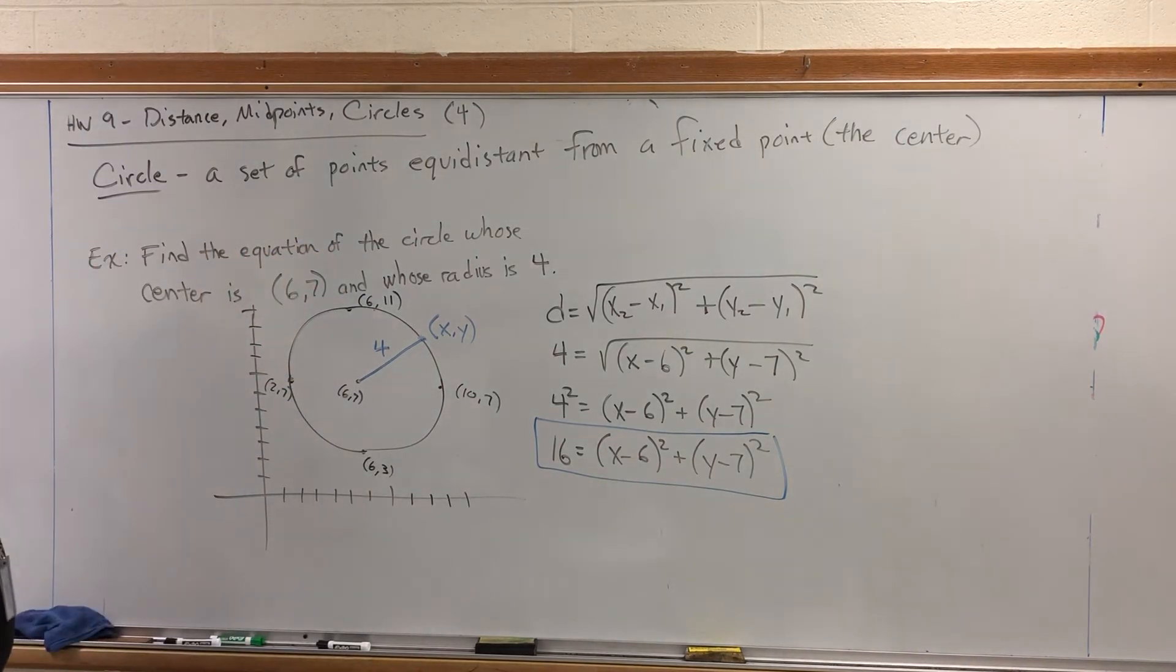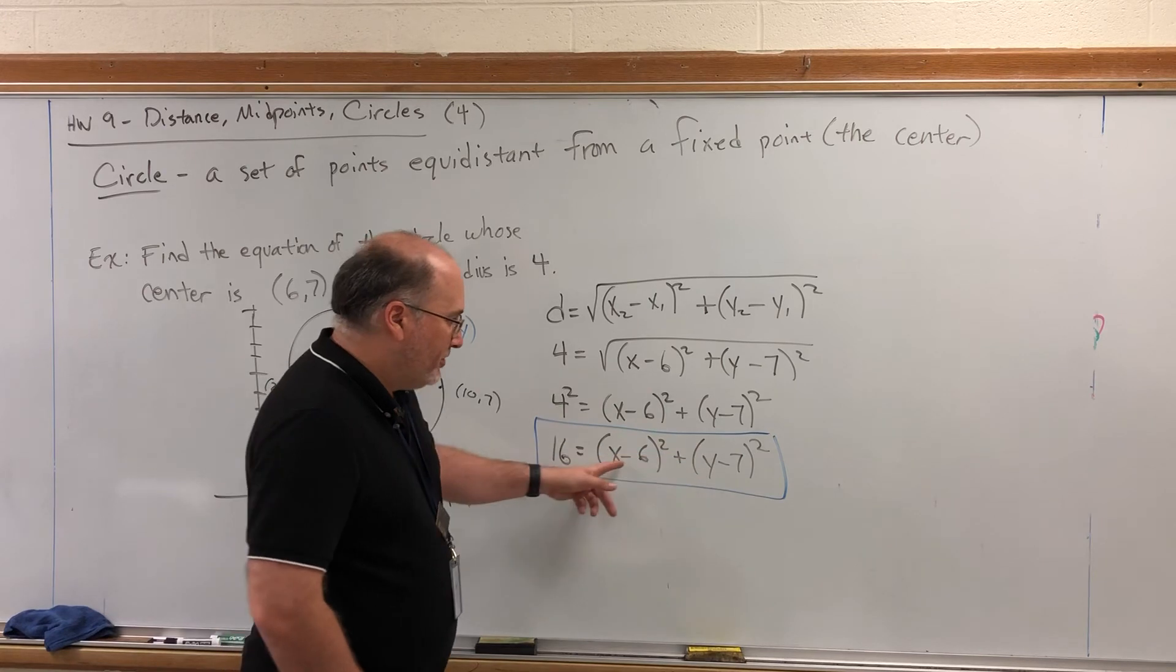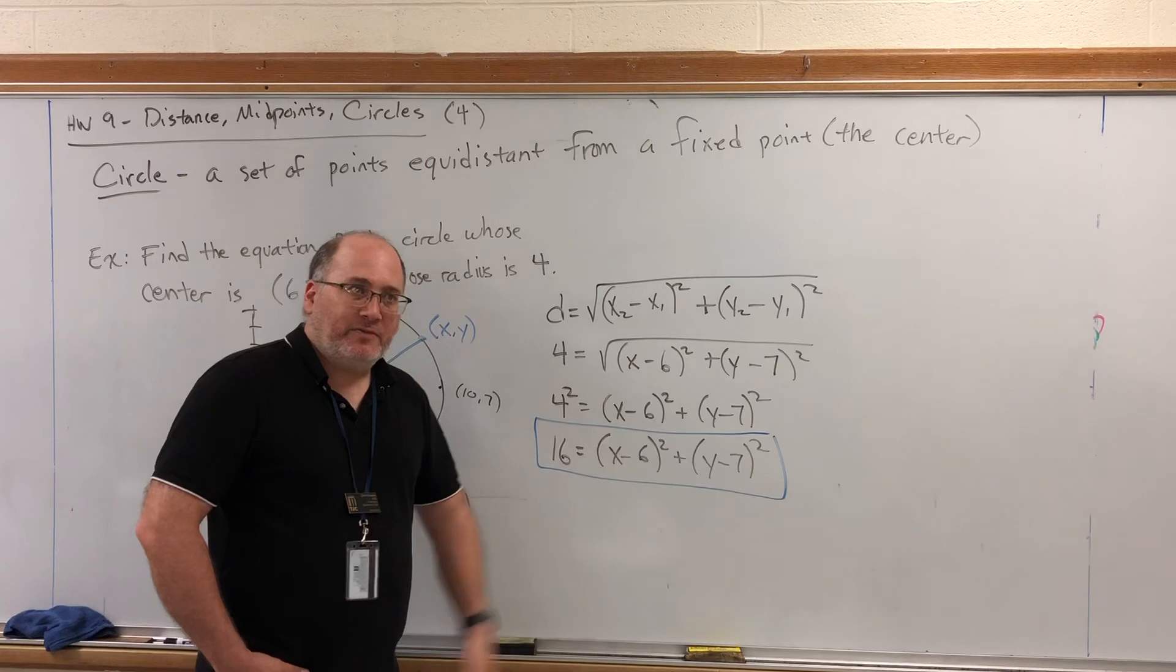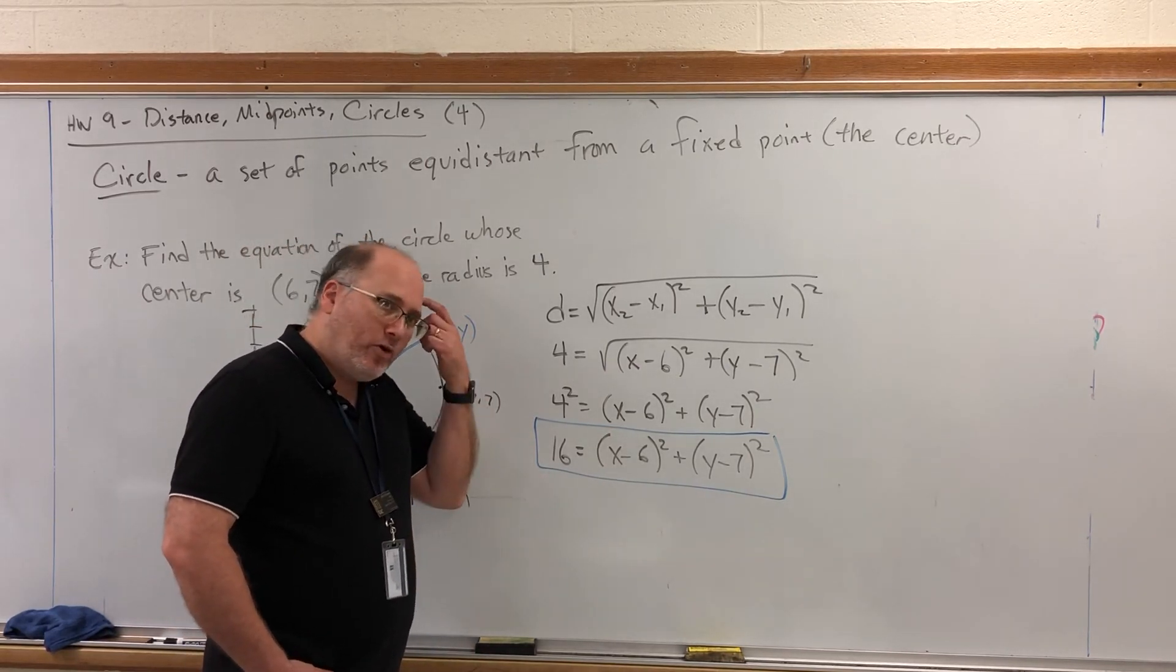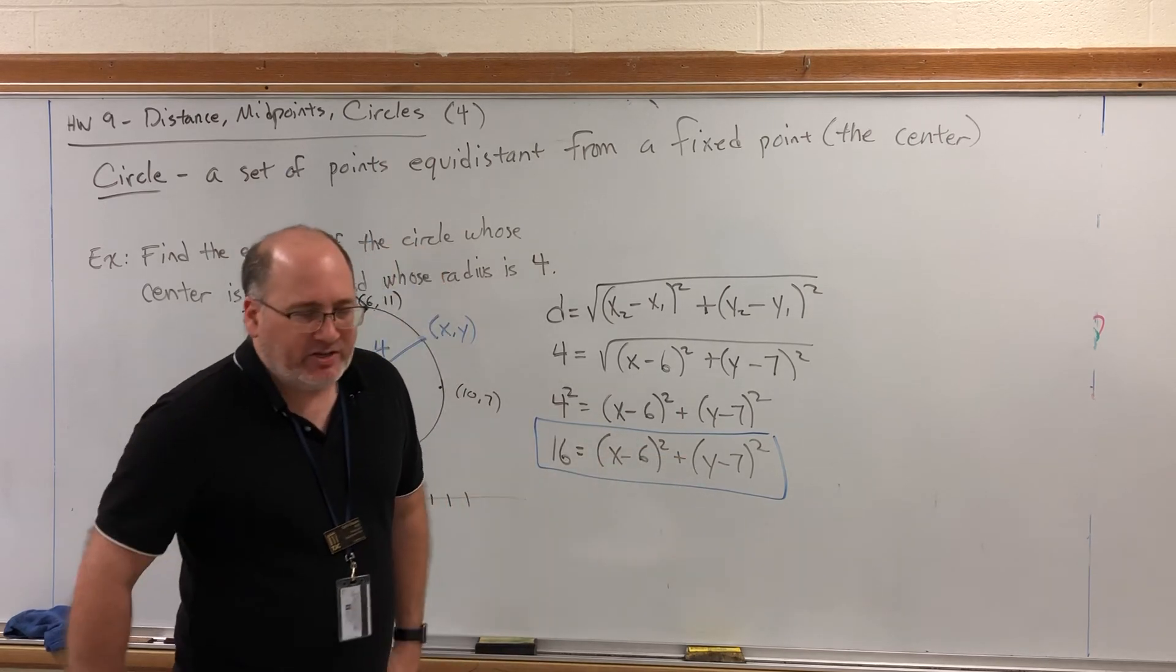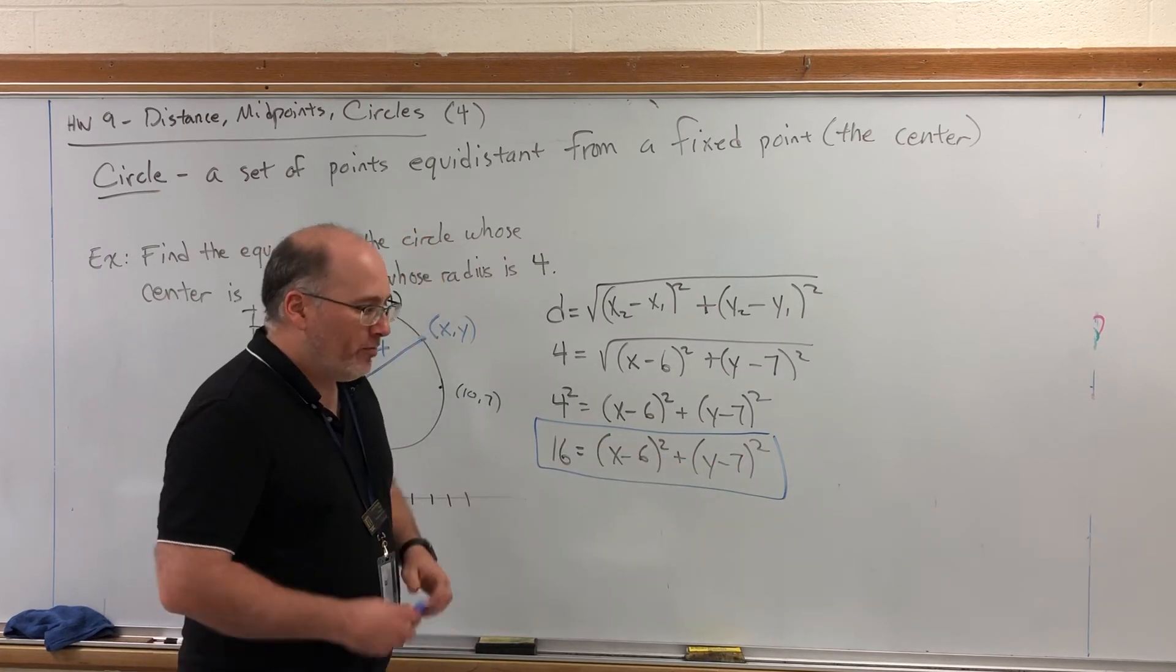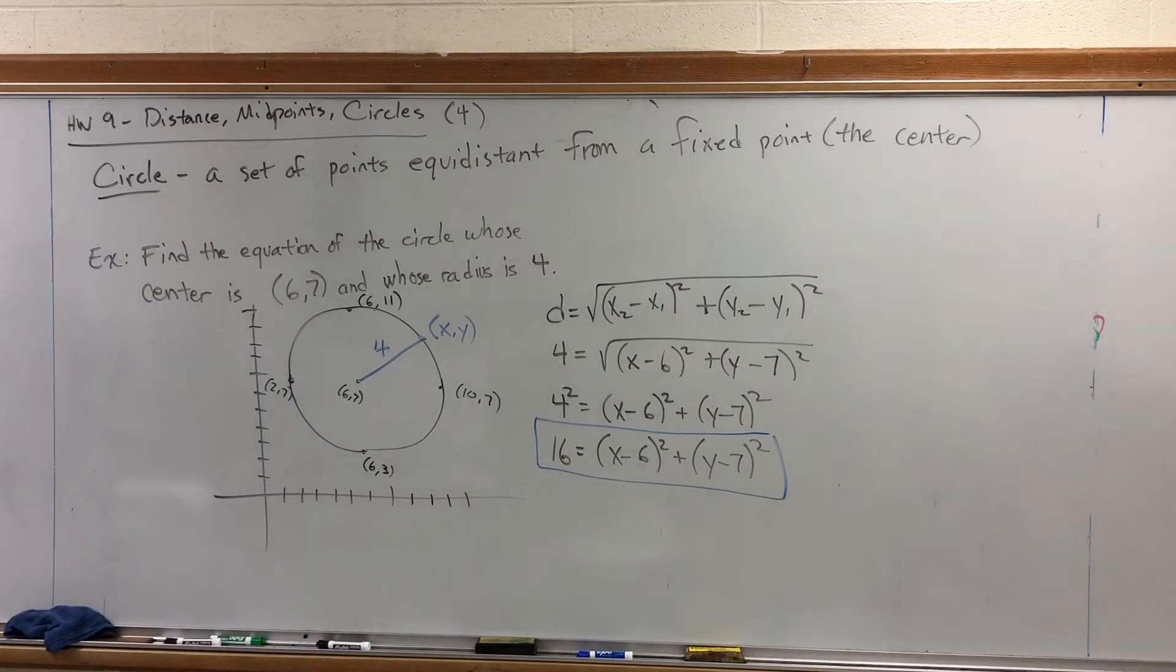So, this example shows us that the equation of the circle can and usually does contain the information that built the circle, both the center and the radius. If we were to foil all this out, combine like terms, move the 16 over, we would lose all of that. It would still be the correct equation, but it would be called general form instead of standard form. Both of those adjectives are weak. If I had to call this anything, I would call it center radius form of the circle. Hey, I think I'll call it that in the next video. Thank you.